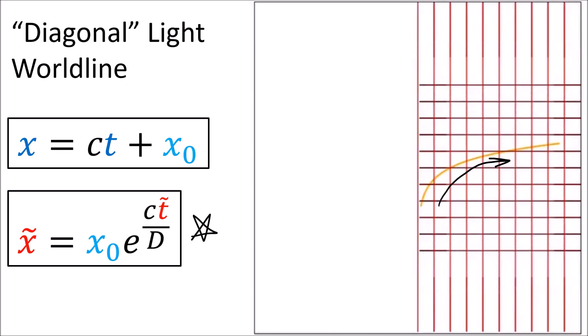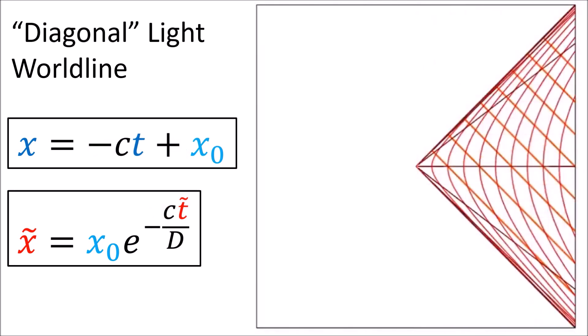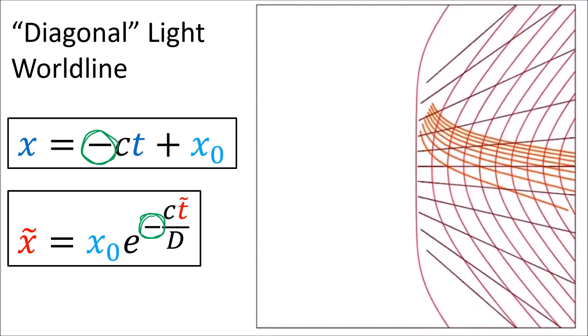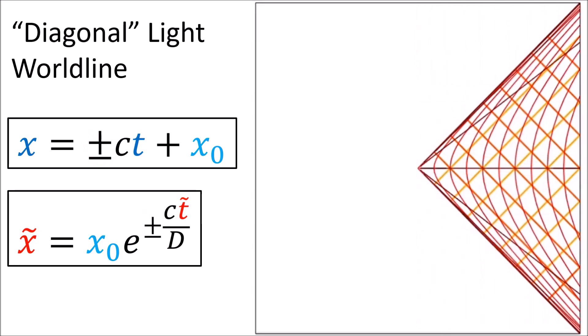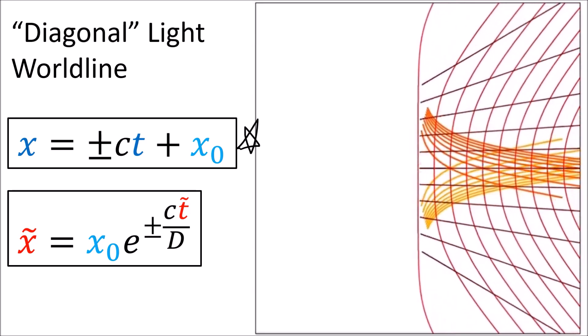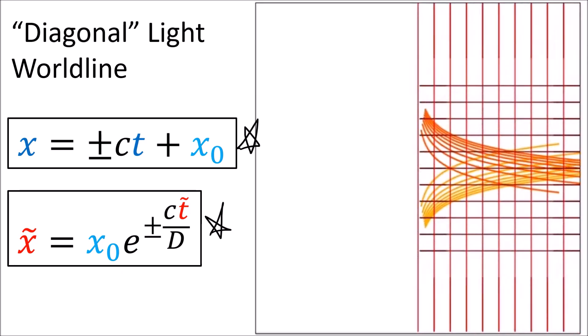So we can see that in inertial coordinates, a beam of light has the equation of a diagonal line, but when we change to Rindler coordinates, a beam of light looks like an exponential curve. If we wanted to look at beams of light traveling left instead, we would just add a minus sign to ct in the inertial coordinate equation, or a negative sign to ct-tilde in the Rindler coordinate equation. We can see that these also result in exponential curves.